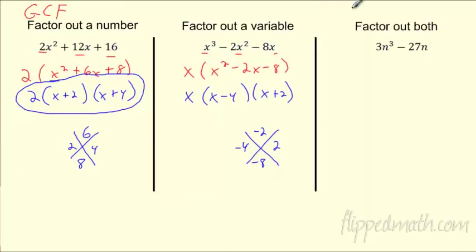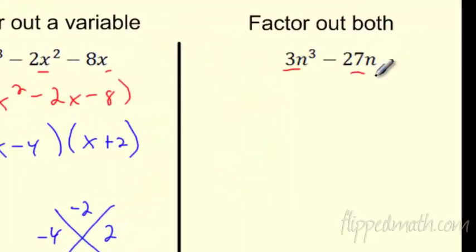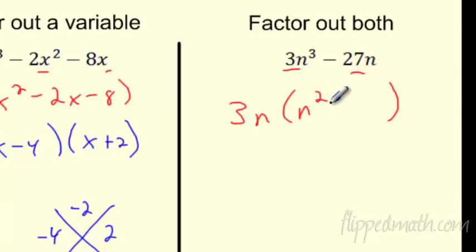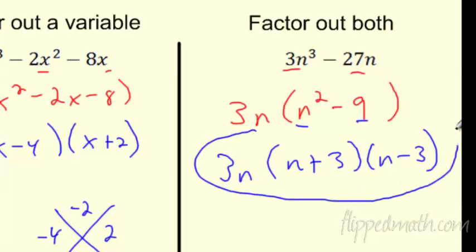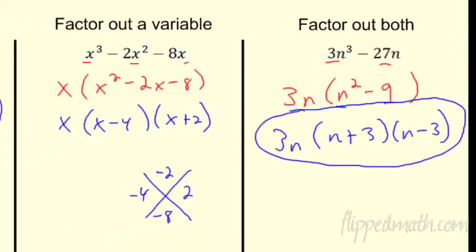Can I factor out both a number and a letter? Sure. 3 divides both of these, and they both have at least one n. What's left if I take 3n out of 3n cubed? I get n squared. Then taking it out gives me 9. Before I go further, I should ask: is this a special case? Yes — this is definitely a difference of squares because I know the square roots of both. This turns into 3n times the quantity n plus 3, n minus 3. That was really the whole section — just combining it all together.